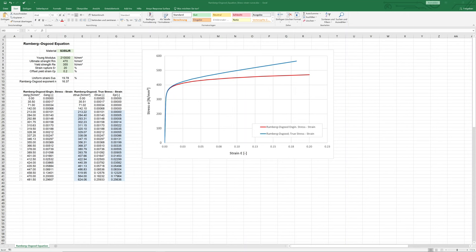I use the formula in the Excel file. You can see that here. You can change material values and generate the corresponding curve.